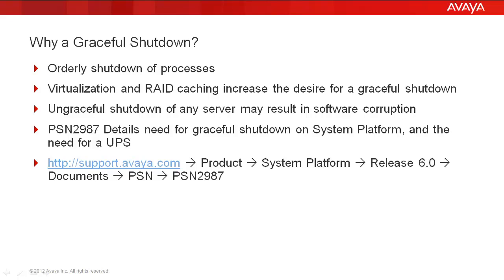For example, Communication Manager. If it has messaging — Communication Manager, Messaging, or IA 770 — Messaging would be the first process to shut down, then Communication Manager, then there's an MCD, then a File Sync, and a number of others, with the last one shutting down being the watchdog. And when it starts up, it's just the opposite. So it's important that it shuts down in that order.